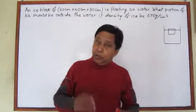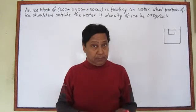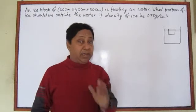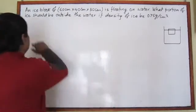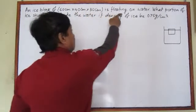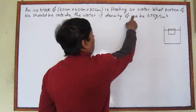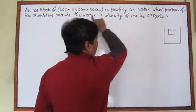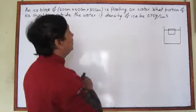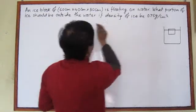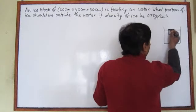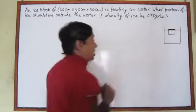I am going to solve a numerical problem related with pressure. I have taken one of the numerical problems from the SLC board of Nepal, class 10. An ice block of given length, breadth, and height is floating on water. We need to find what portion of the ice should be outside the water, given that the density of ice is provided.